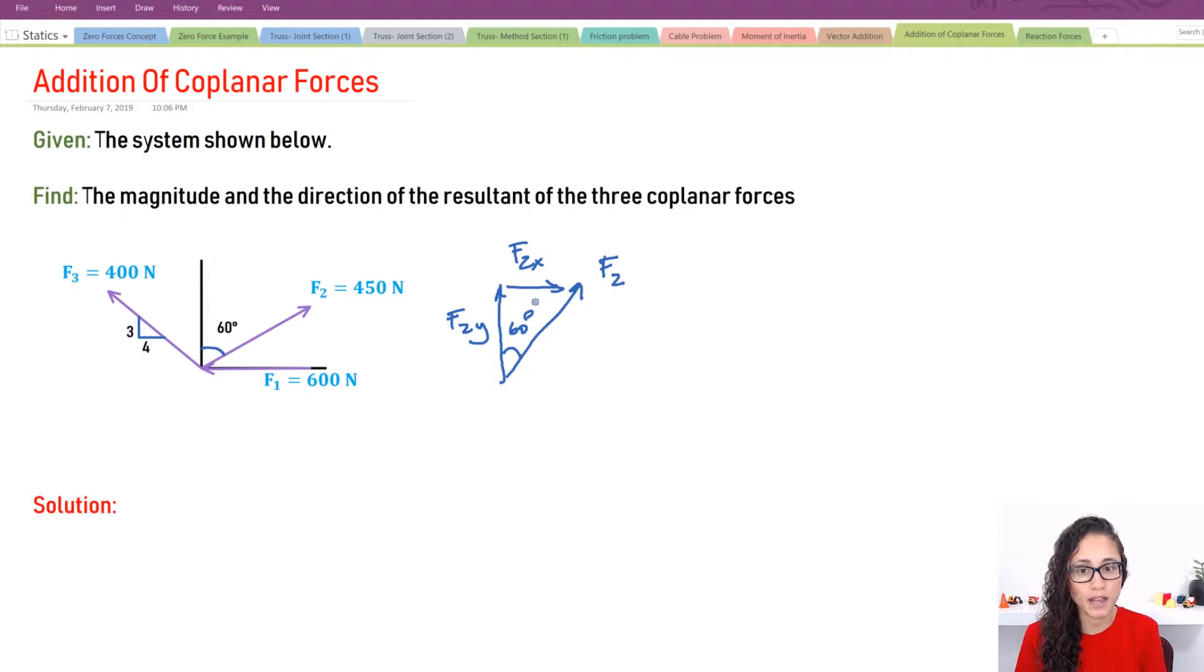So let's determine F2x in terms of F2. I have F2x is equal to F2 and I'm going to have sine 60 because it's the opposite. Now my F2y is going to be F2 cosine 60 because it's the adjacent.